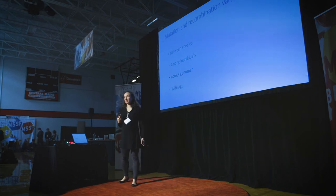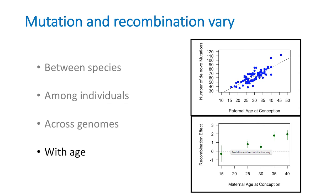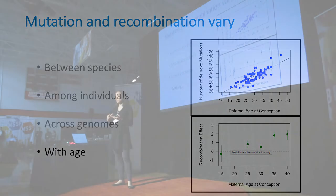We also know that mutation and recombination vary with age. In fathers, the chromosomes of older dads accumulate more new mutations, meaning older dads transmit more mutations to their kids. Recent work has begun to shed light on the fact that the incidence of sporadic rare genetic diseases is increased in older fathers compared to younger fathers due to this very phenomenon. And in older moms, chromosomes actually undergo higher rates of recombination-based reshuffling.